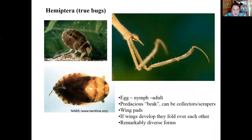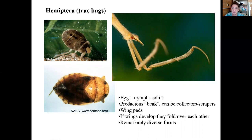Next is Hemiptera, the true bugs. The best way to identify this group is their beak-like mouthparts. Some have wing pads, and when wings are present they often overlap — one laying on top of the other. There's a ton of diverse life forms within Hemiptera; a good diversity was caught in the class collection, and it's pretty remarkable how varied the general body plan is across this group.